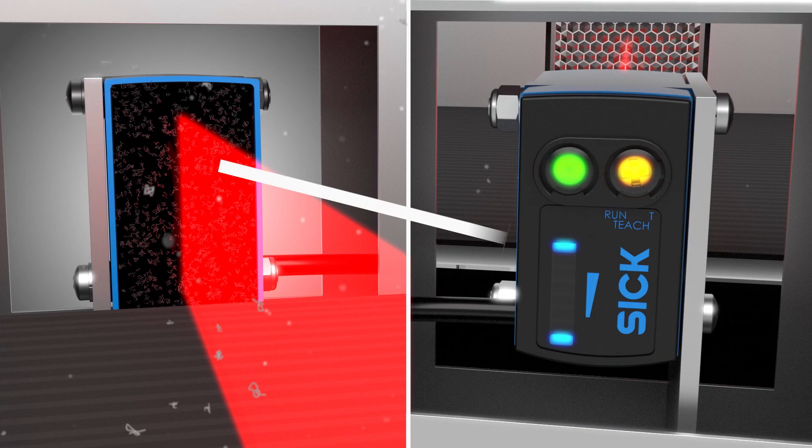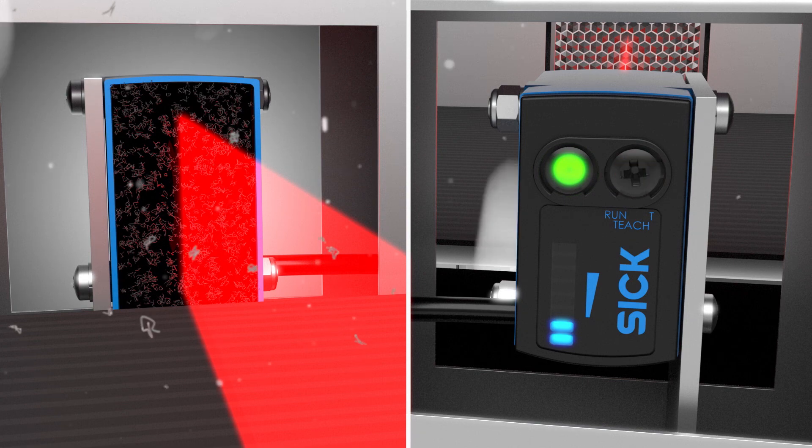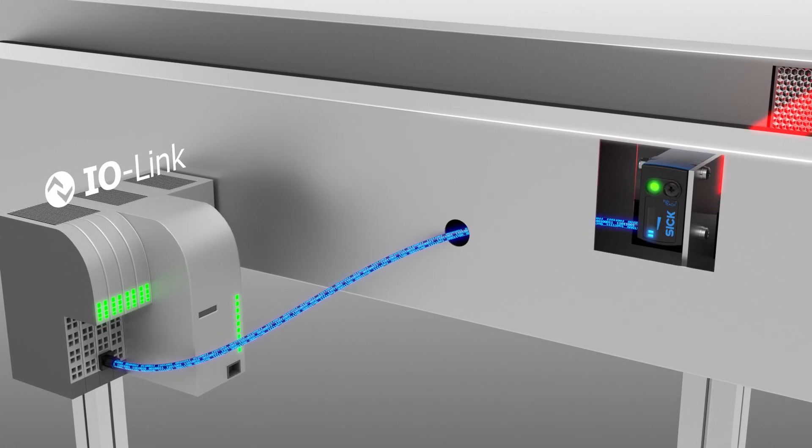Both sensors are equipped with a bar graph. In case of increasing contamination, the user will be informed at the sensor or via IO-Link that cleaning is needed to avoid downtime.